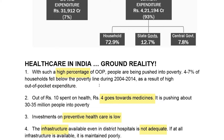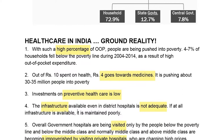4 to 7% of households went into poverty because of out-of-pocket expenditure during the 2004 to 2014 period. In simple terms, out of every 10 rupees spent on health care, 4 rupees goes only towards medicines. This is pushing nearly 30 to 35 million people into poverty, and this is also a loophole of the Indian health care system — these are the ground realities of today.